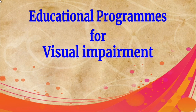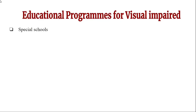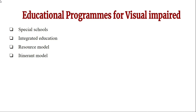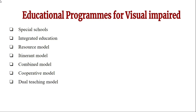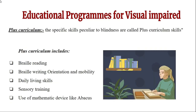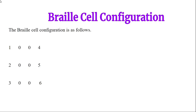Educational programs for visually impaired children include special schools, integrated education, resource model education, itinerant model education (where teachers travel to provide services to students with disabilities), combined model education, cooperative model education, dual teaching model, inclusive education, and the plus curriculum. The plus curriculum includes skills specific to blind people such as Braille reading, Braille writing, orientation and mobility, daily living skills, sensory training, and use of mathematical devices like the abacus.